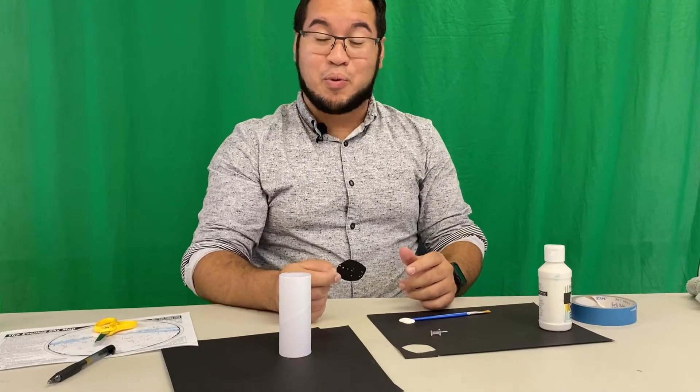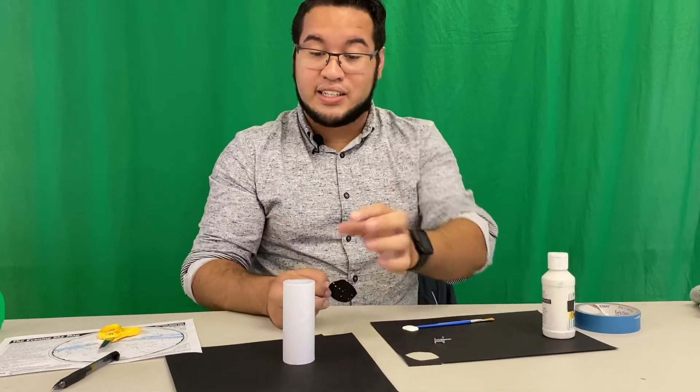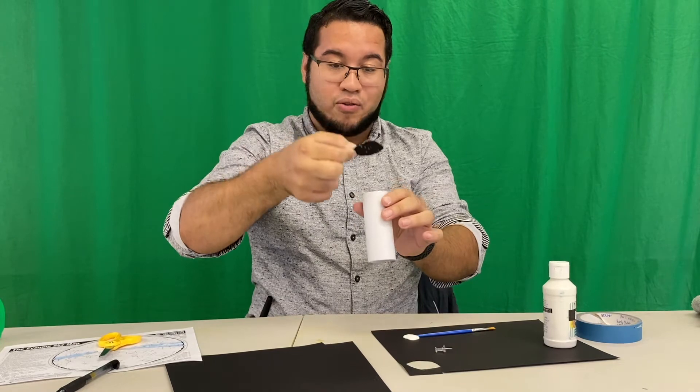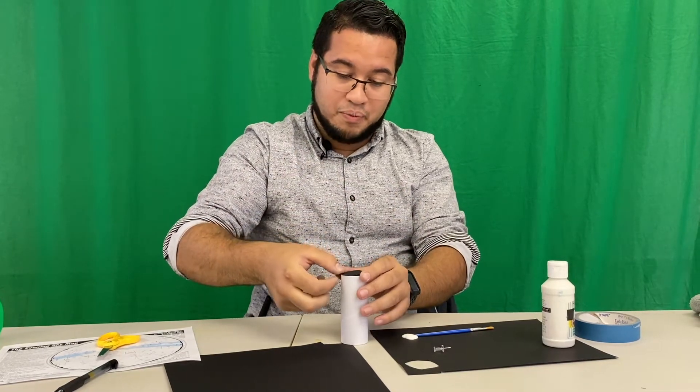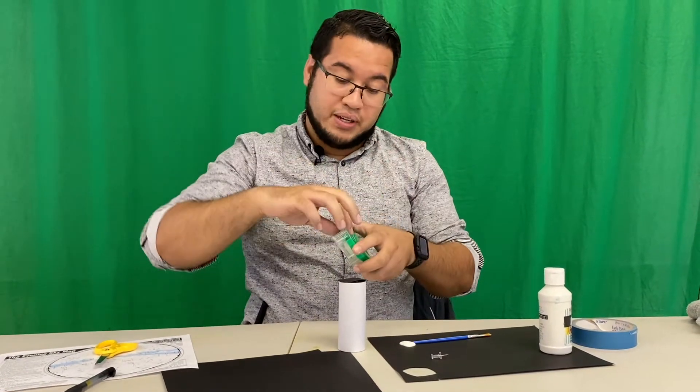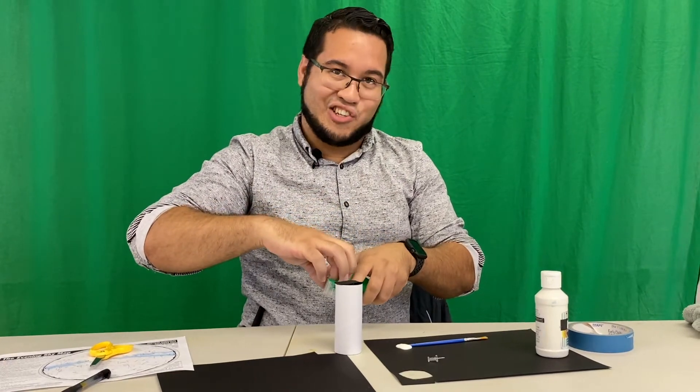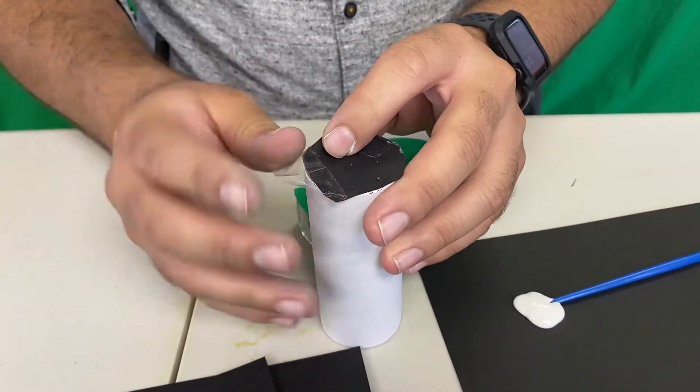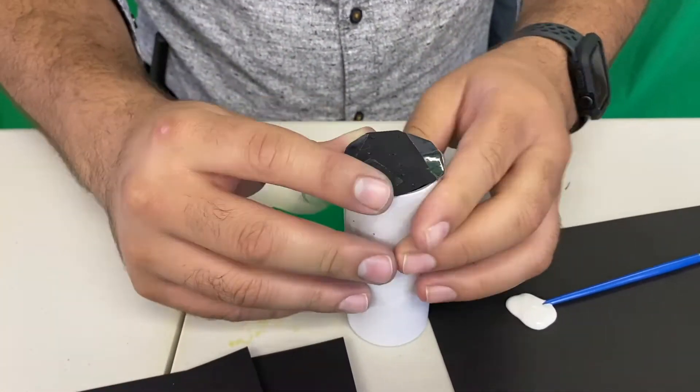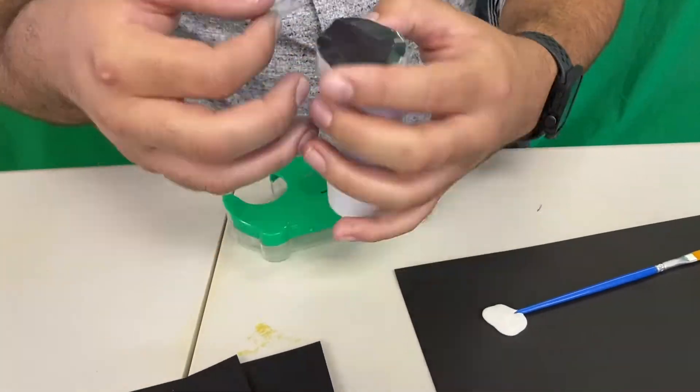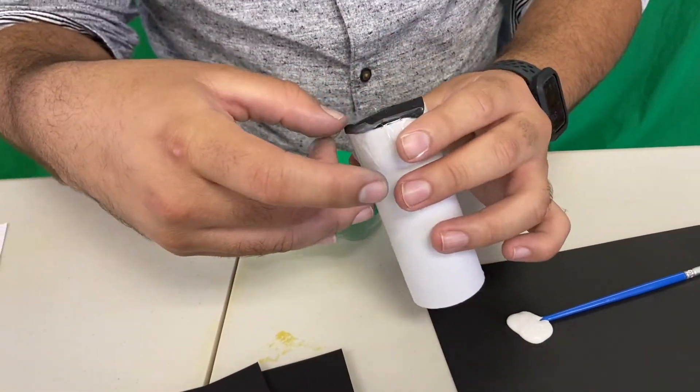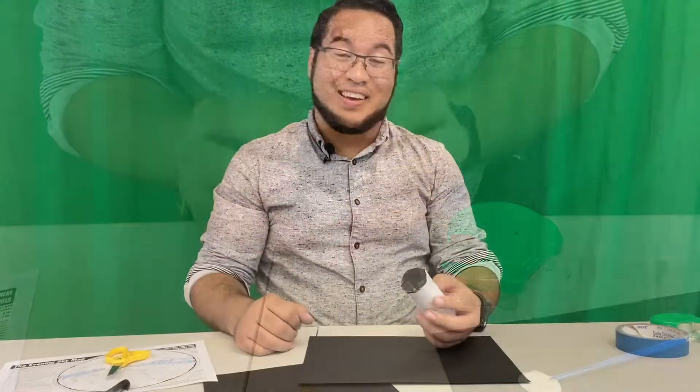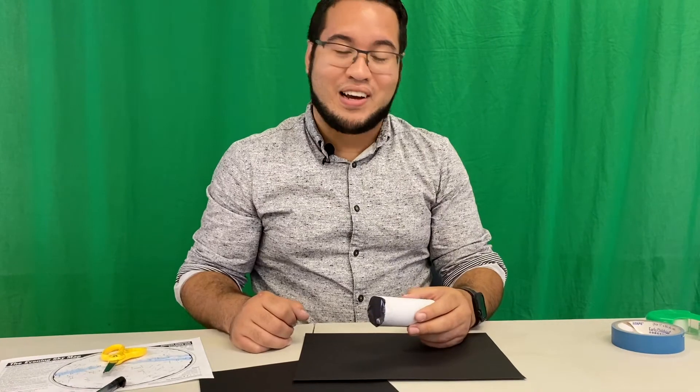All right now that we have the holes poked through our sheet of paper it's time to attach it into our tube. Now you want to make sure you do this with the side that you colored or painted facing down. So that's going to go on the top of the tube and once you place it on top you're just going to grab a couple of strips of tape. Make sure it's nice and secure and just like that you've got your very own constellation tube.